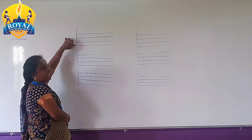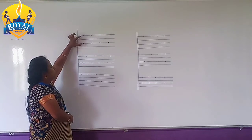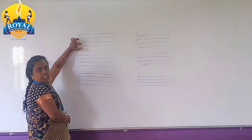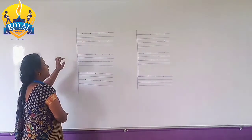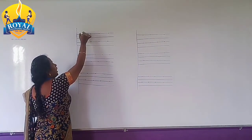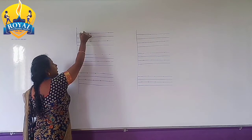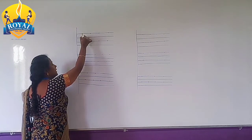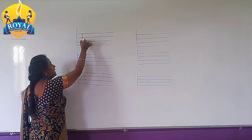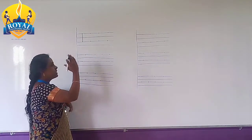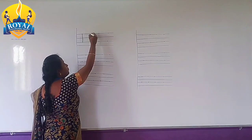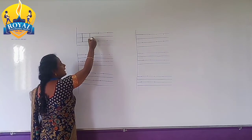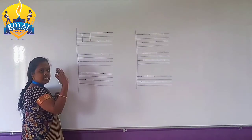Now, letters. Put the pencil to the headline, come down to the second middle line — it's called a standing line. Put the pencil to the headline, come down to the second middle line. It's called a standing line.